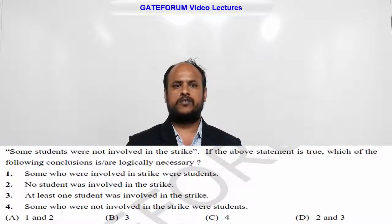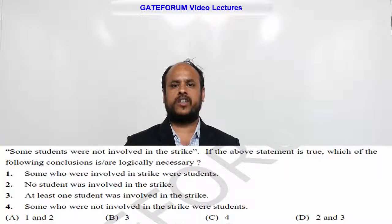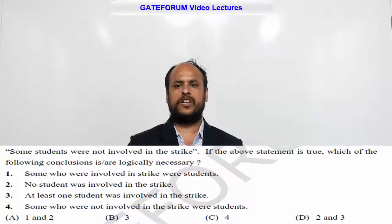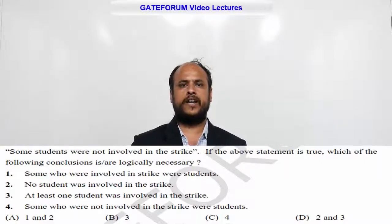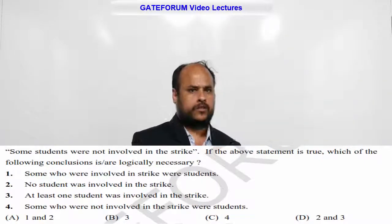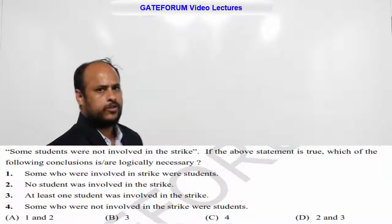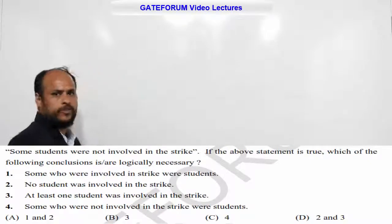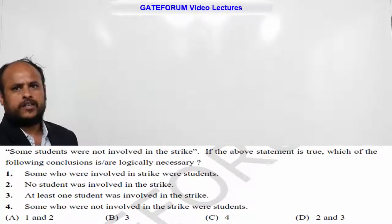Option A is given 1 and 2. Option B is given 3. Option C is given 4. Option D is given 2 and 3. To simplify this, I will use Venn diagrams.